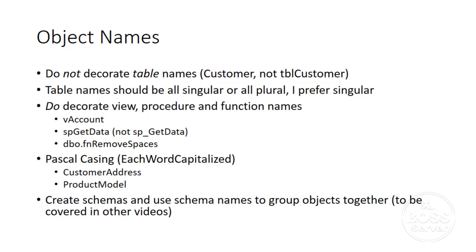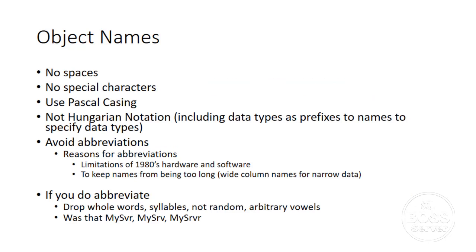A topic I'll be hitting on is creating schemas — by this I mean schema names within the database. Schemas are actually groups, kind of like namespaces but for database objects. Use those to group objects together. For object names: don't use spaces, don't use special characters. Putting spaces requires that everything be contained within double quotes or brackets, and special characters cause problems with other applications. Just don't do it. Use Pascal casing.